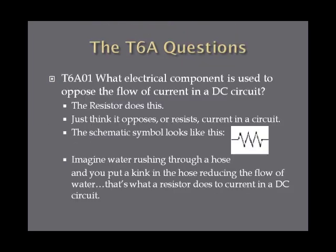What electrical component is used to oppose the flow of current in a DC circuit? A resistor opposes the flow of current in a DC circuit. If you think of "resists" or "opposes," anything that opposes or resists current in a DC circuit is a resistor. The schematic symbol looks like a sharp-edged squiggly line. If you picture water rushing through a hose and you put a kink in it reducing the flow, that's essentially what a resistor does.